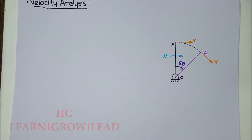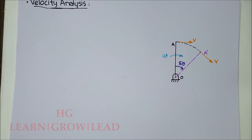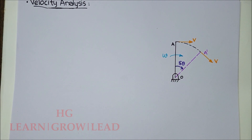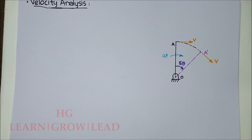Before going into the lecture, we should know what a mechanism is. A mechanism is an assemblage of different rigid bodies such that there occurs some relative motion. So relative motion is produced, and motion is transmitted through the assembly in the mechanism.